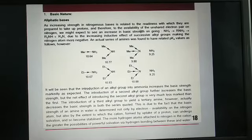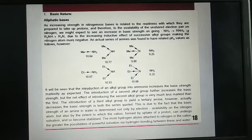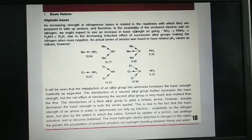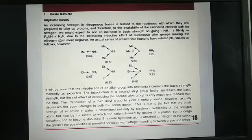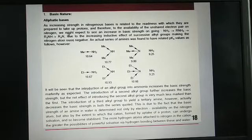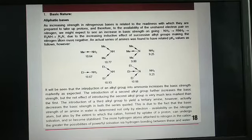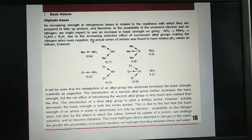An actual series of amines was found to have related pKa values as follows. So due to the presence of 1 alkyl group in 1 degree amine, the bonded electrons are pushed towards nitrogen. And in 2 degree amines, 2 alkyl groups push the bonded electrons towards nitrogen. And in 3 degree amines, 3 alkyl groups push the electrons to nitrogen. So nitrogen is more negative in 3 degree amines and ready to accept proton. So 3 degree amine is more basic than 2 degree than 1 degree than ammonia.